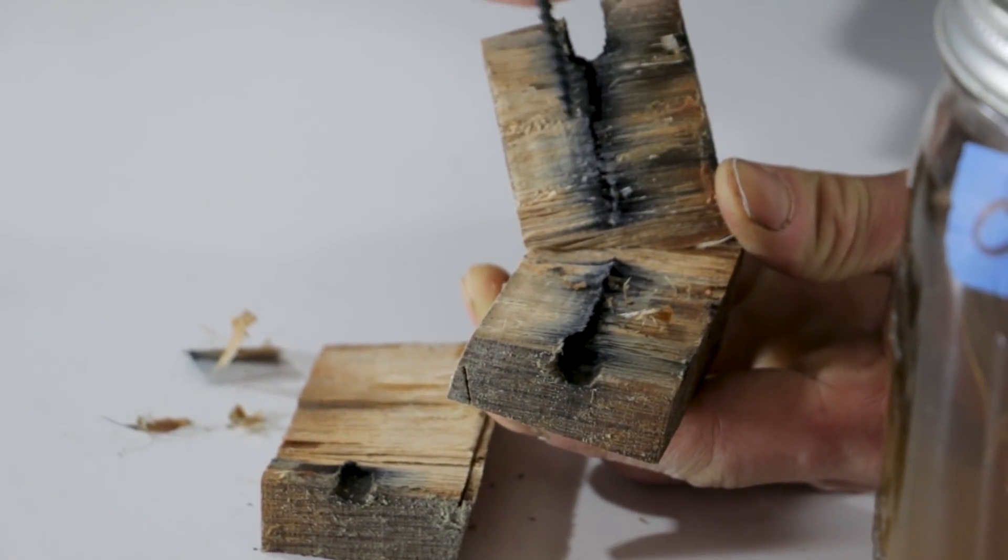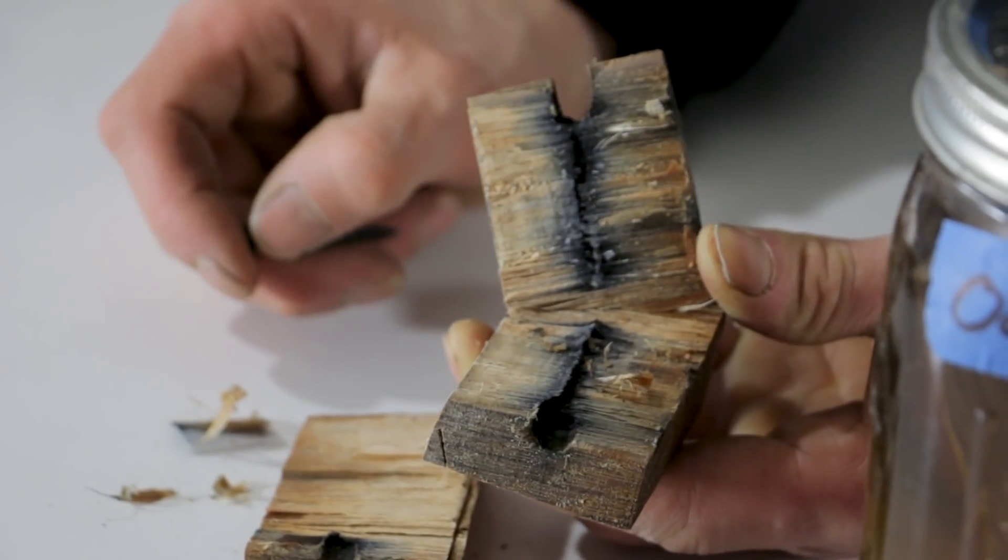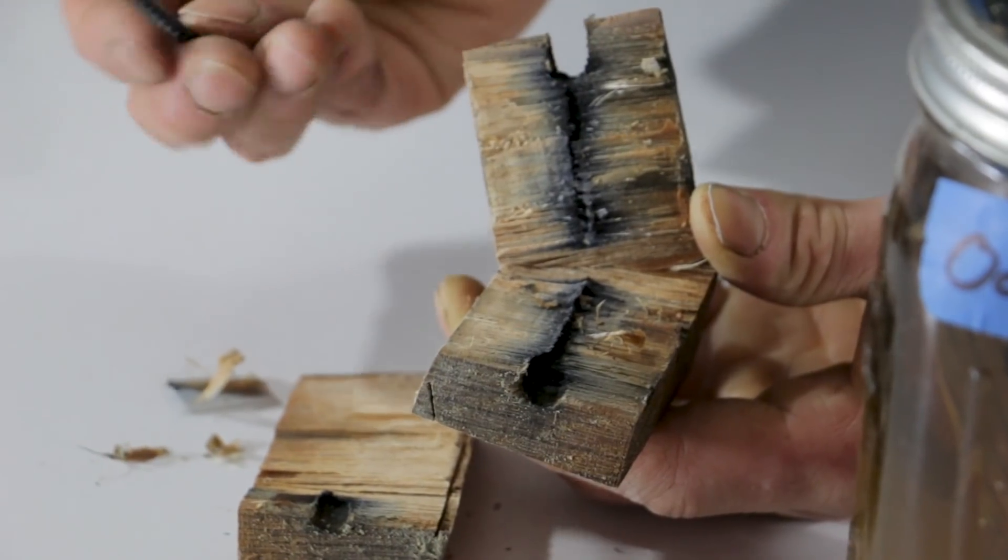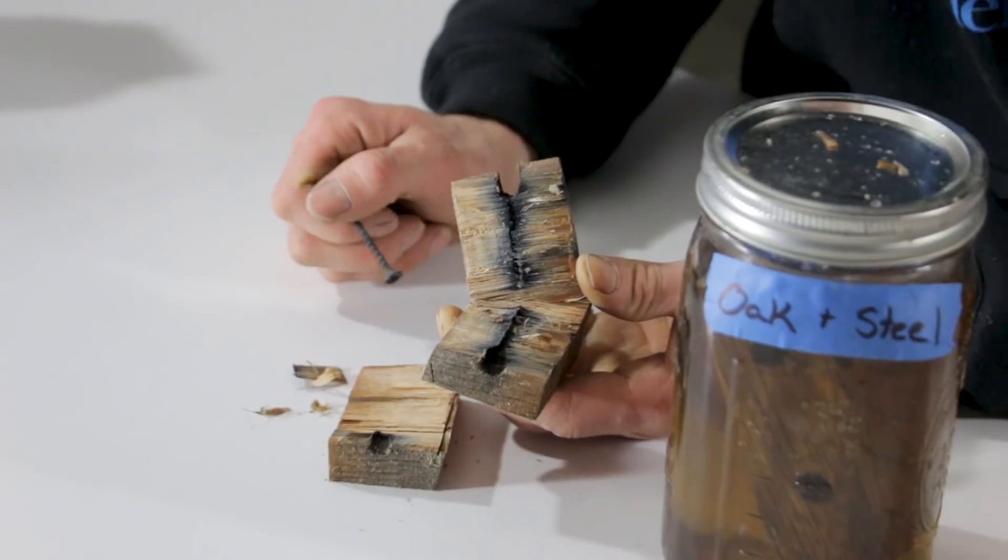And that is just a perfect classic example of what iron sickness looks like. You can see it's just radiating out. And in time, this wood will just turn black and goopy and totally disintegrate. So not only do you have the corrosion with the mild steel, but you have iron sickness on top of it with the oak.